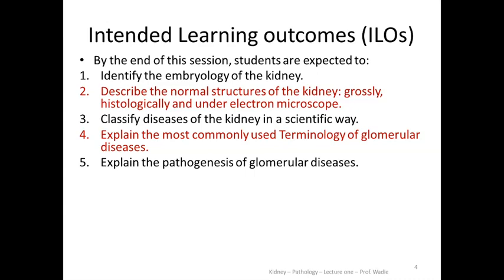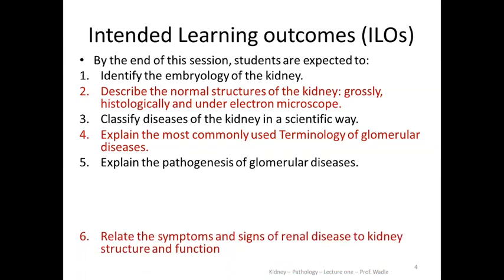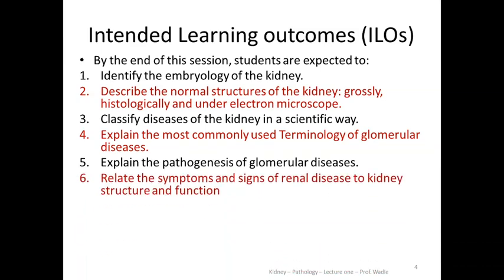The fifth point of my objective for this session is that by the end of this session you should be able to explain the pathogenesis of glomerular diseases — how do they occur, why do they occur, and how do they occur in a chronological or time sequence. The sixth learning outcome: I would like you to relate the symptoms and signs of renal disease to kidney structure and function.